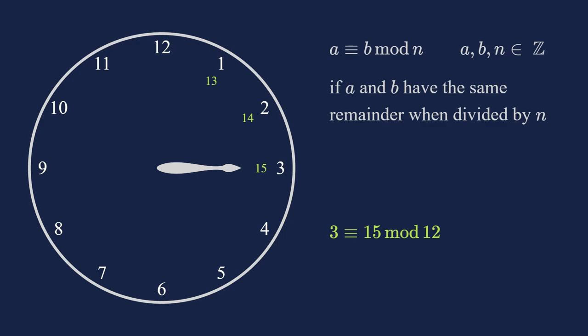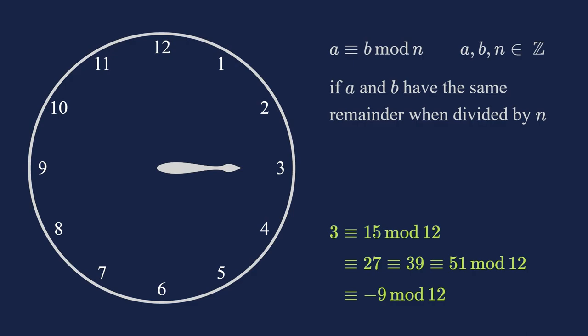In math, we say that 3 is congruent to 15 modulo 12. Whenever we write a is congruent to b modulo n for integers a, b, and n, we mean that a and b have the same remainder when divided by n. So 3 is congruent to 15 modulo 12, since after dividing by 12, both have remainder 3. Hence, both are also congruent mod 12 to 27, 39, 51, and so on. But these numbers are also congruent to minus 9 mod 12. It might be uncomfortable to think of minus 9 having a remainder of 3 when dividing by 12. Therefore, it's often easier to use a different characterization. a is congruent to b modulo n if that difference is divisible by n. In practice, you can always think of a clock.